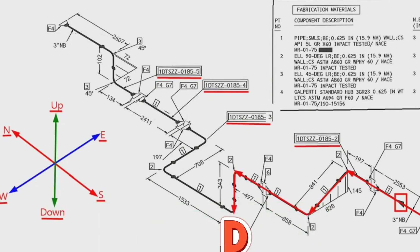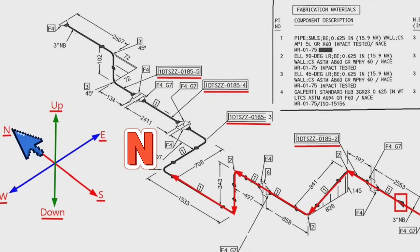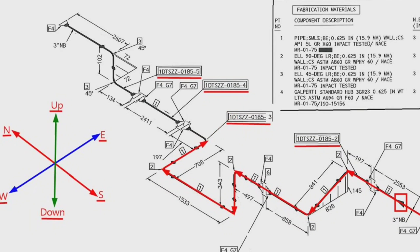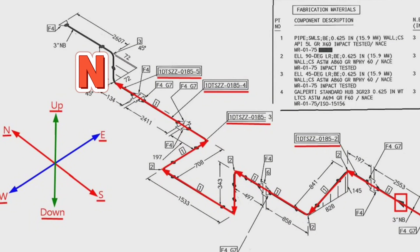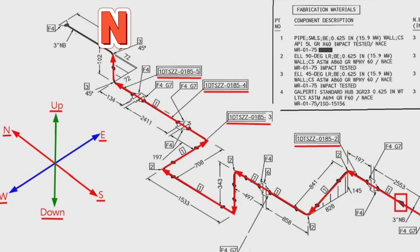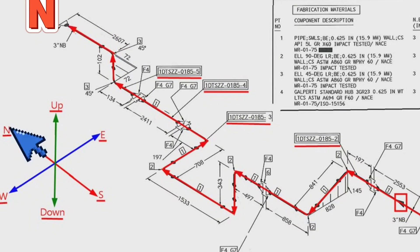Then the pipeline travels to the north direction. At this point the pipe travels downward, then to the north direction again, and then to the east. The pipeline then goes northward, moving first to the east along the dashed line 72 mm, then to the north along the dashed line 72 mm under a 45-degree angle. At last the pipe turns to the north and the correct reading of the pipe drawing is completed.